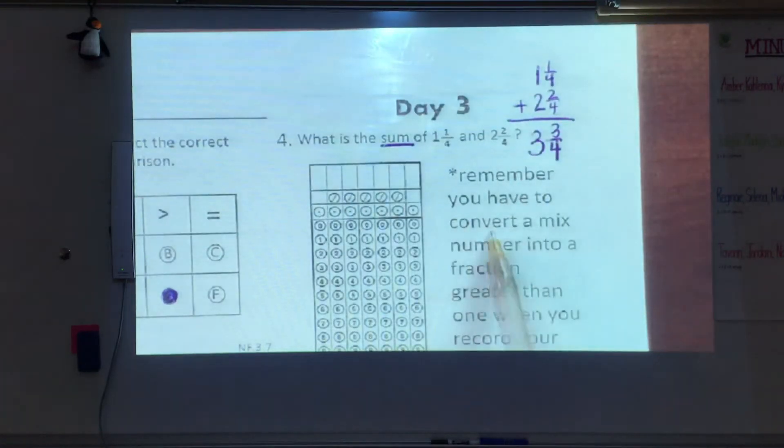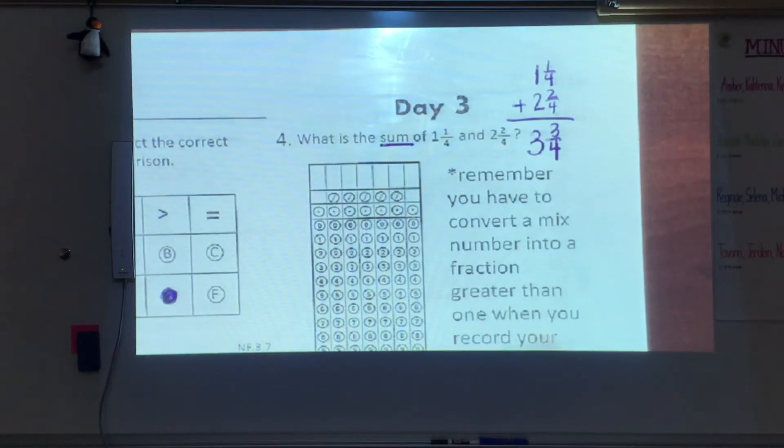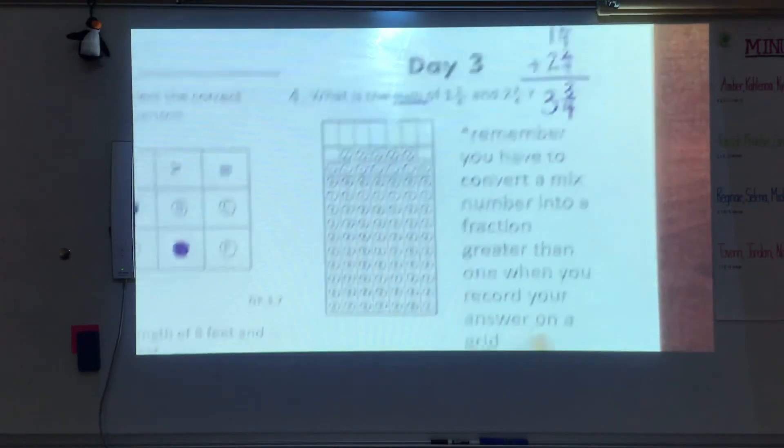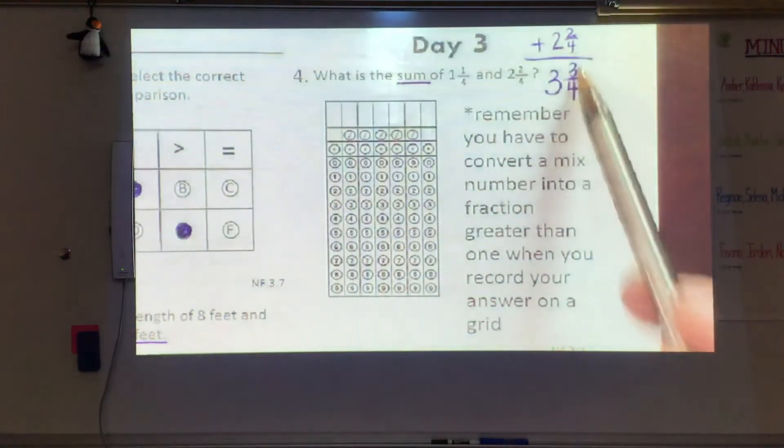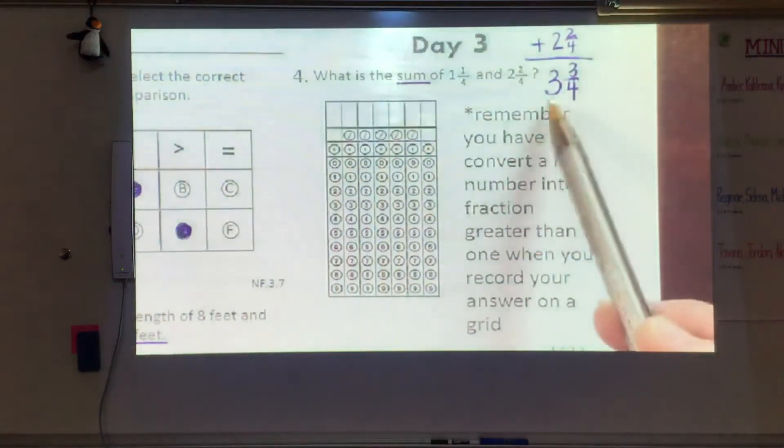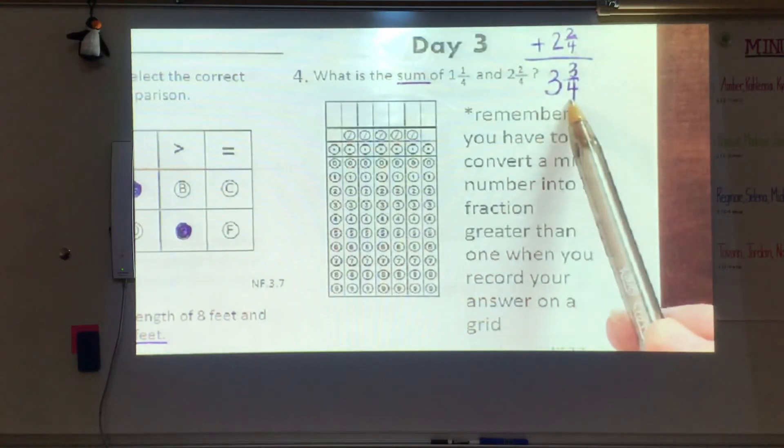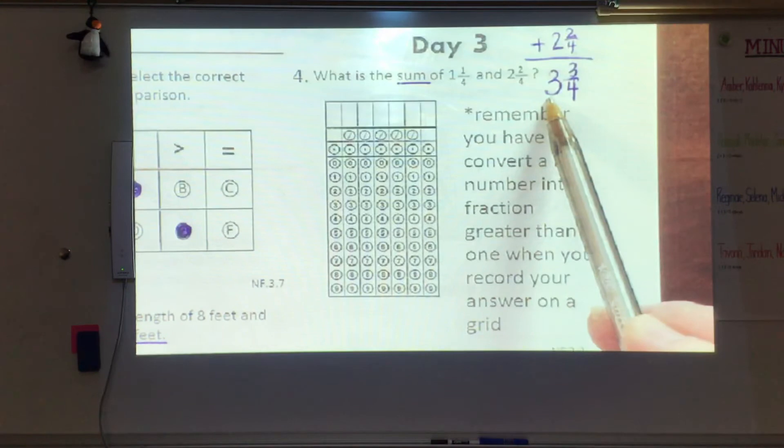It says, remember, you have to convert a mixed number into a fraction greater than one when you record your answer on a grid. So 3 and 3/4. Well, I have 3 wholes. I know a whole is 4/4. So I've got to have three 4/4.